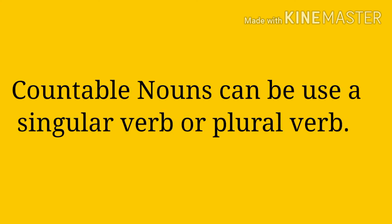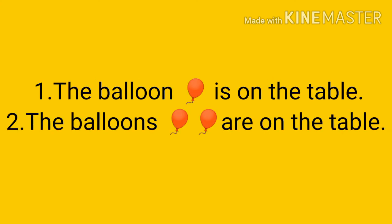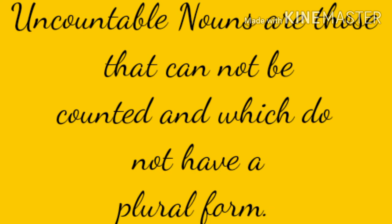Now next, countable nouns can be used with a singular verb or plural verb. Singular and plural verb bhi use karte hain. So singular verb like is, plural verb are. For example, number one: the balloon is on the table. Number two: the balloons are on the table. Ek balloon hai toh is, do balloons hain toh are. Toh ye hai verb.